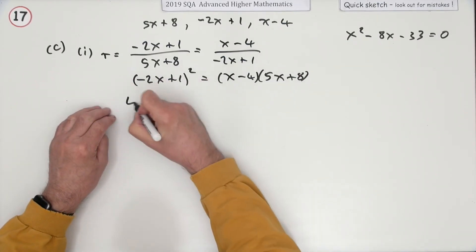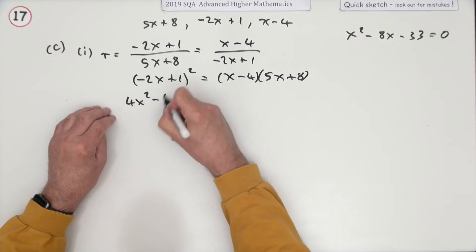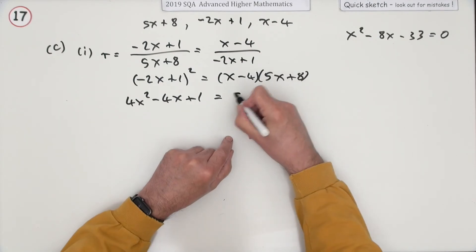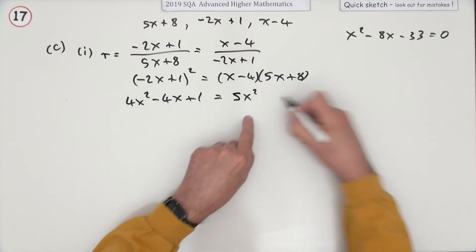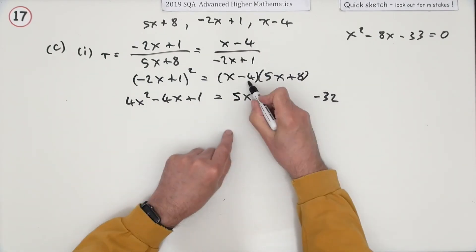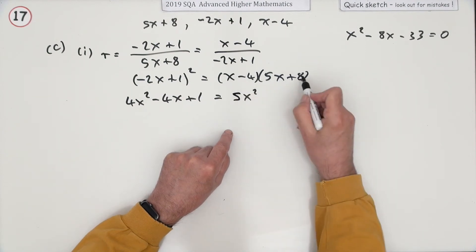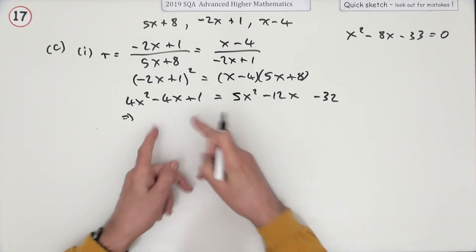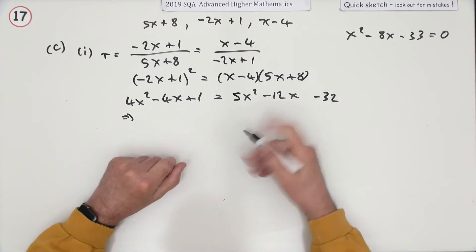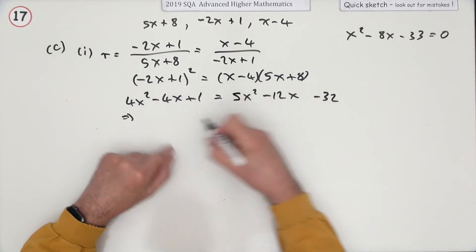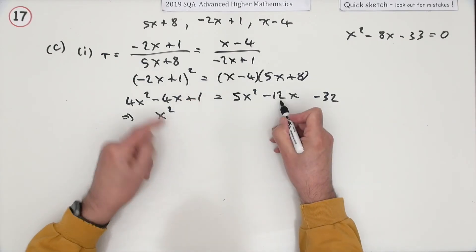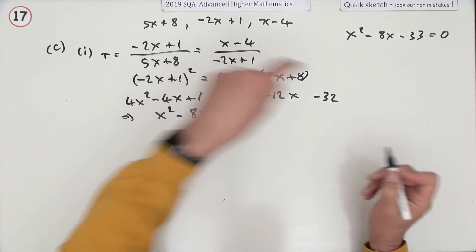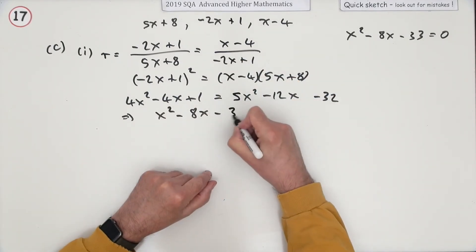Expanding the left side: (negative 2x + 1)² = 4x² minus 4x + 1. The right side: (x minus 4)(5x + 8) = 5x² minus 12x minus 32. Rearranging by bringing everything to one side gives x² minus 8x minus 33 equals 0.